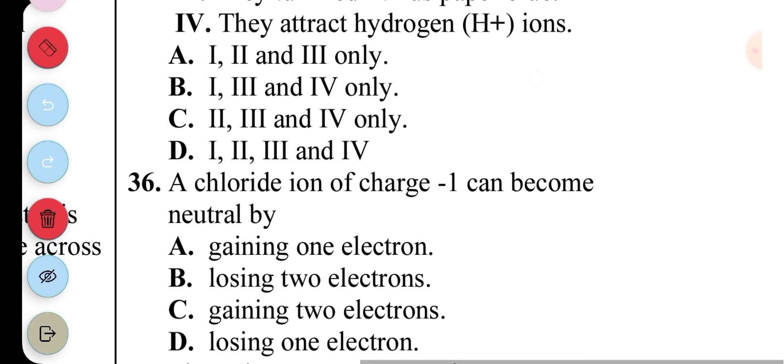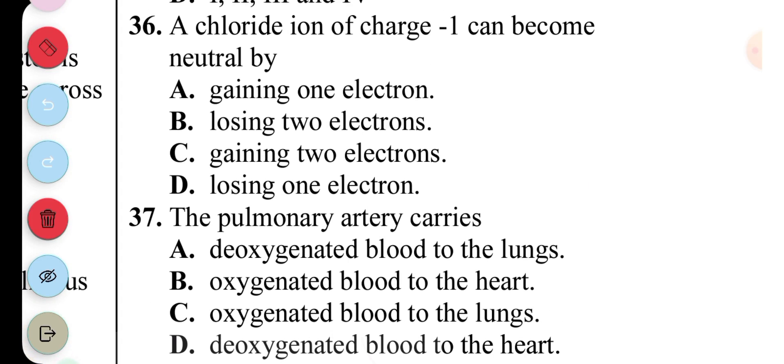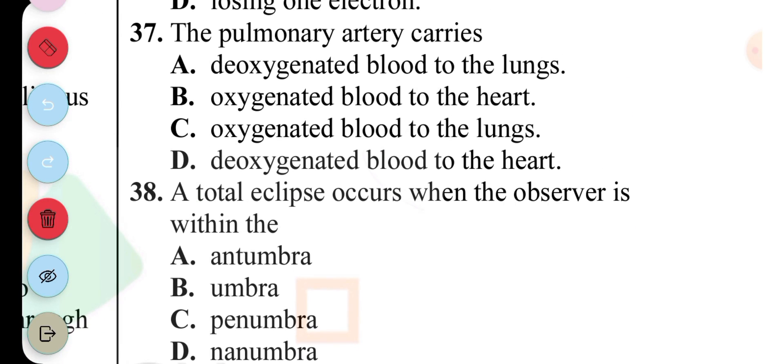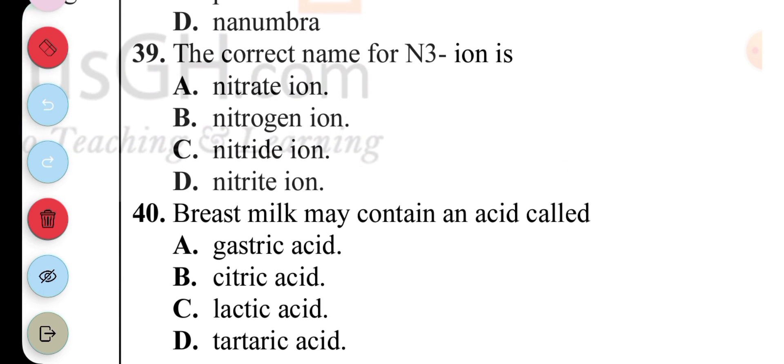Question 36: Chloride ion of charge minus one can be neutral by losing one electron. Question 37: The pulmonary artery carries oxygenated blood to the lungs - that's true. 37 is A. Question 38: The total eclipse occurs when the observer is within the umbra. So 38 is B. Question 39: The correct name of N3- ion is C, Nitride ion. Question 40: Breast milk may contain an acid called... 40 is C, Lactic acid. Thank you for watching this video. Click on the image by my channel name to see more videos like this.